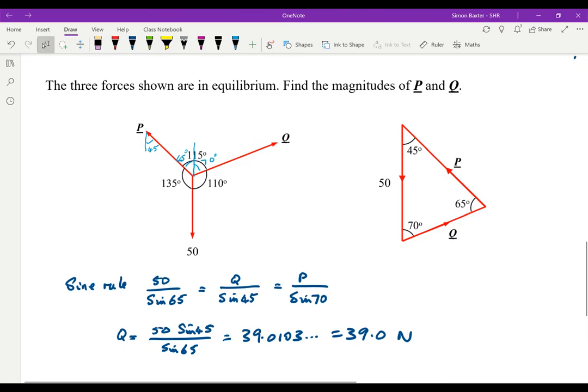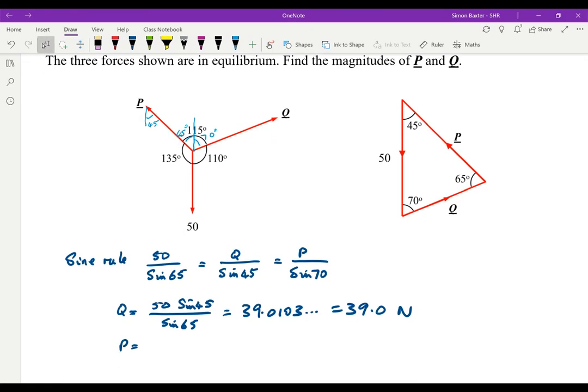And P is going to be equal to 50 sine 70 over sine 65. That comes from the sine rule. That's equal to 51.8418, etc., which is 51.8 newtons.